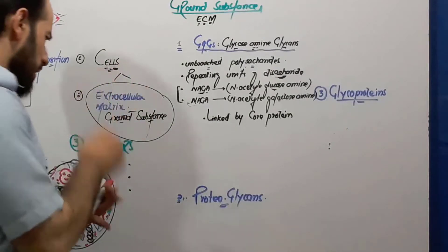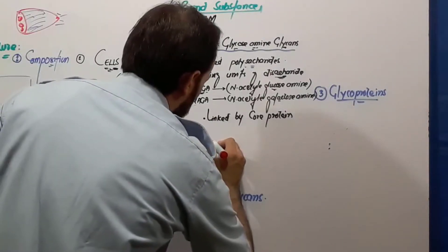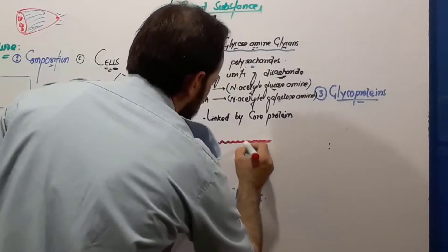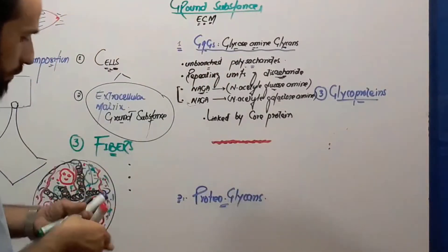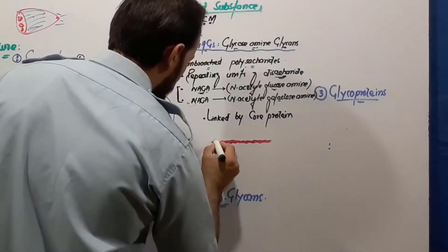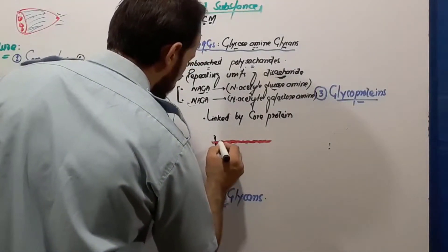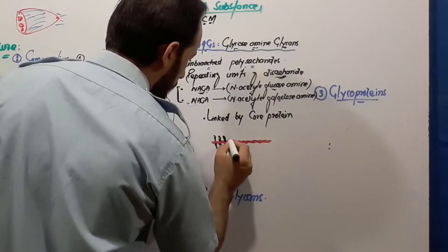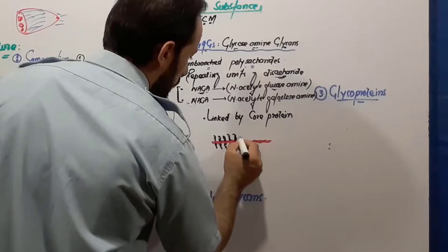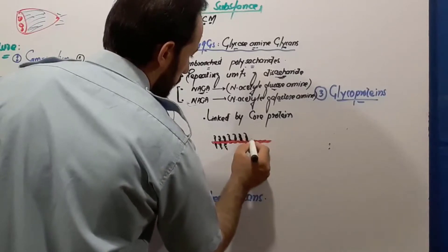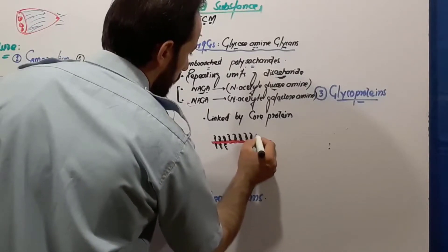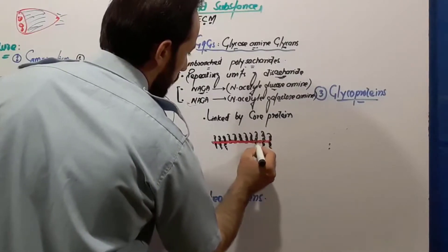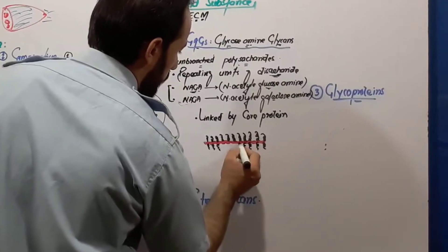Now let us draw the diagram. For example, this is a core protein. To this core protein, these disaccharide units are attached — NAGA, NAGA, NAGA, NAGA. This is the GAG molecule, and this is the structure which we can see from the lateral side.